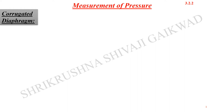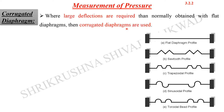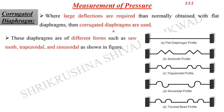In continuation with the last lecture, today we are going to talk about corrugated diaphragms. In the last lecture we talked about elastic transducers, specifically the flat diaphragm, which is used for smaller deflection measurements. Wherever there is a large amount of deflection, we cannot use a flat diaphragm, so we need to modify it — we use a corrugated type of diaphragm.